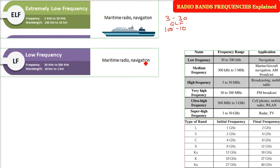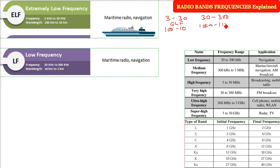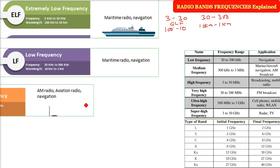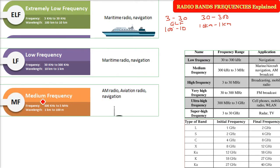Then we have the Low Frequency (LF), ranging from 30 kilohertz to 300 kilohertz. You'll understand why the frequency is less — because frequency and wavelength are inversely related, and the wavelength here is 10 kilometers to 1 kilometer. Maritime radio and navigation are the main applications.